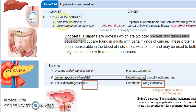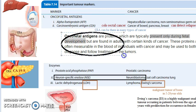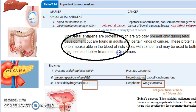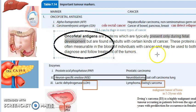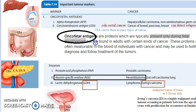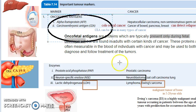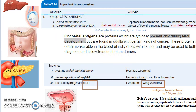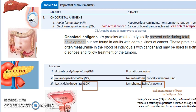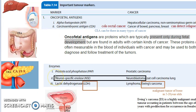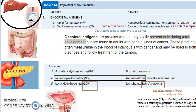The first group is oncofetal antigens. These are typically present only during fetal development. If found in adults, something is wrong. There are two examples: alpha-fetoprotein (AFP) and carcinoembryonic antigen (CEA). AFP is seen in liver carcinoma — specifically hepatocellular carcinoma — and in tumors of the testis.